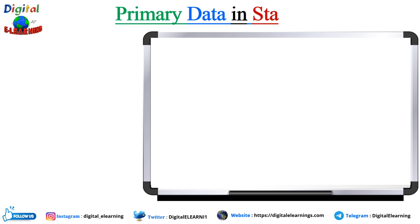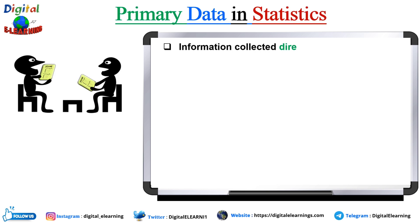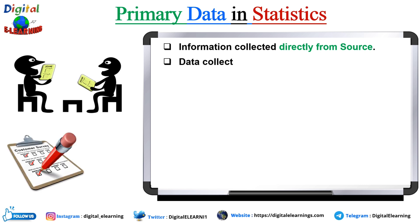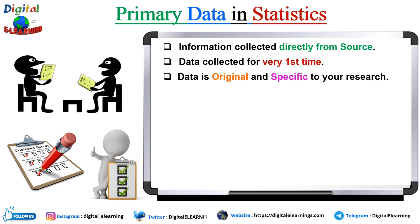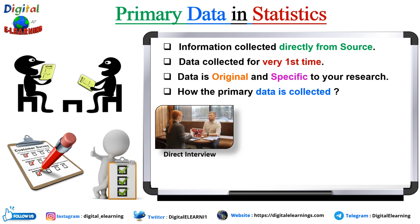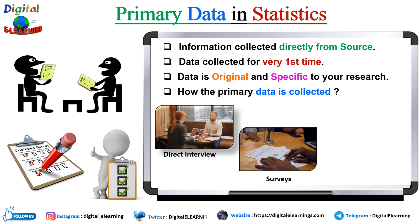Let's start with primary data first. Primary data is information that is collected firsthand, directly from the source. Data collected by researchers for the very first time from different sources is your primary data, and that is why it is called firsthand information. The data is original and specific to your research, making it super valuable for drawing conclusions and making decisions. Primary data is collected through direct interviews, surveys, and experiments.